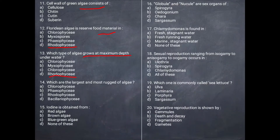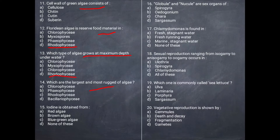Next question: Which are the largest and most rugged algae? They are brown algae. Next question: Iodine is obtained from which algae? From brown algae. The correct answer is B, brown algae.